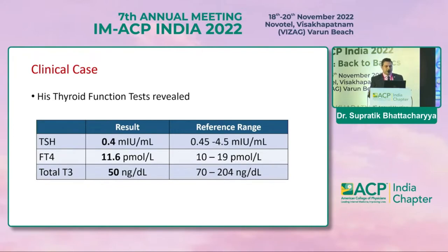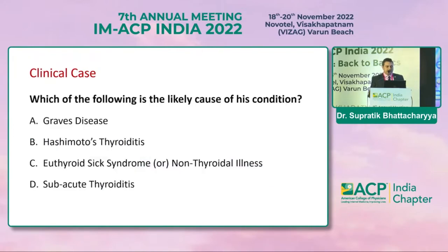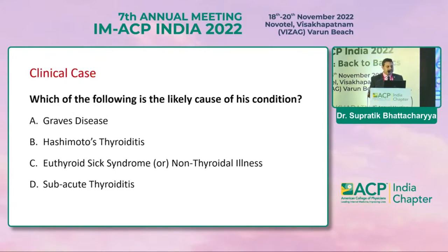You can see the reference range on the right-hand side. Which of the following is the likely cause of his condition? The choices are: Graves' disease, Hashimoto's thyroiditis, euthyroid sick syndrome or non-thyroidal illness, and subacute thyroiditis. We'll come back and revisit these options after we have talked about this topic.